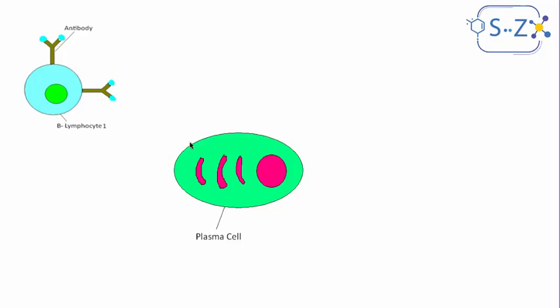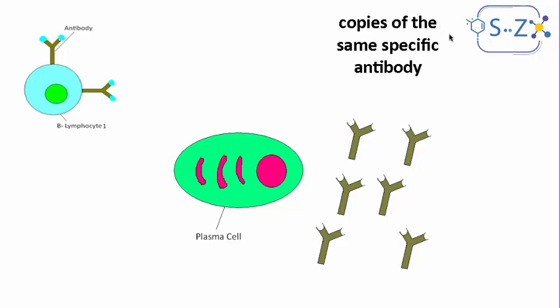After the activation of the specific B lymphocyte, this B lymphocyte will transform into what we call a plasma cell, which is a big cell. It's just like a copy machine. It will secrete copies of the specific antibody in order to release them to the bloodstream.